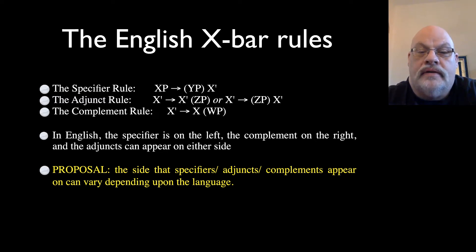So an XP can consist of YP X-bar or X-bar YP. And the complement rule will be X-bar consists of X WP or WP X. And then you choose which of these options you have when you're a baby learning the language.